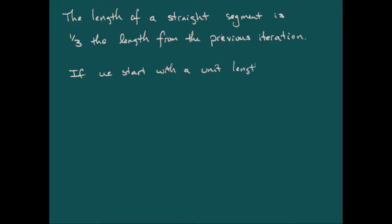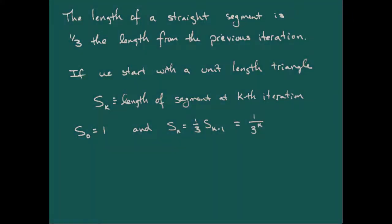Now the length of the line segment actually is going to be one-third the length from the previous iteration. And so if we start with a unit length triangle, then if we let s sub k be the length of a straight segment at the kth iteration, then we start off with s sub zero just being one. Then s sub k is going to be one-third of s sub k minus one, which just gives us one over three to the k as the length of a straight line segment at the kth iteration.